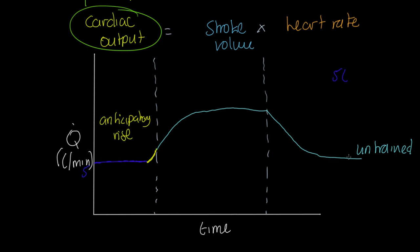Now, this green line represents a trained athlete. Let's look at the differences. The resting level and anticipatory rise are the same, but first, there's a steeper increase.